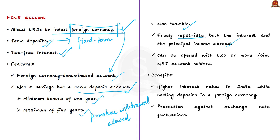FCNR accounts benefit NRIs living in countries with low interest rates — such as the US, UK, Canada, and Australia — since India's FCNR interest rates are higher. They also protect NRIs against exchange rate fluctuations. These are the key details to know from a Prelims perspective for answering questions on FCNR accounts.